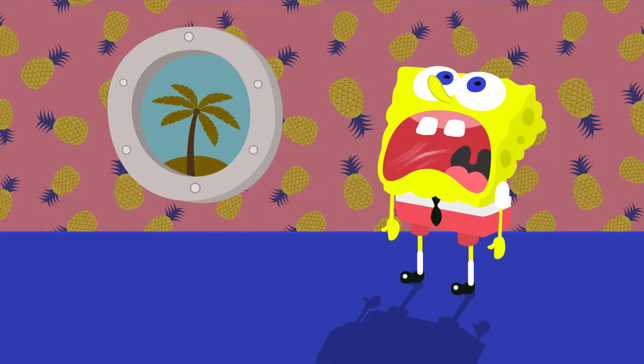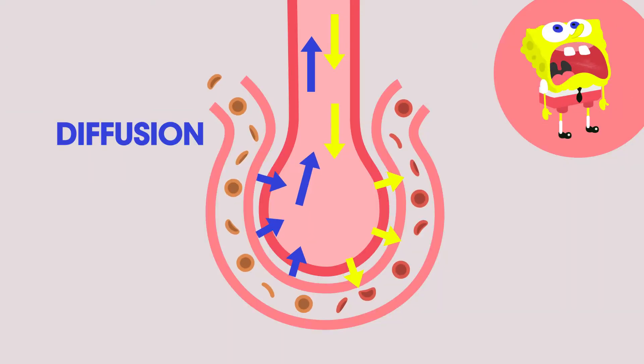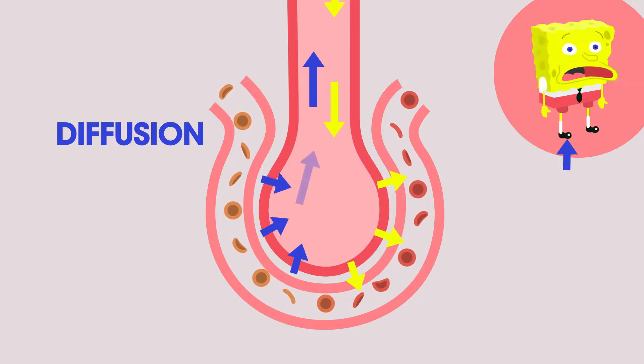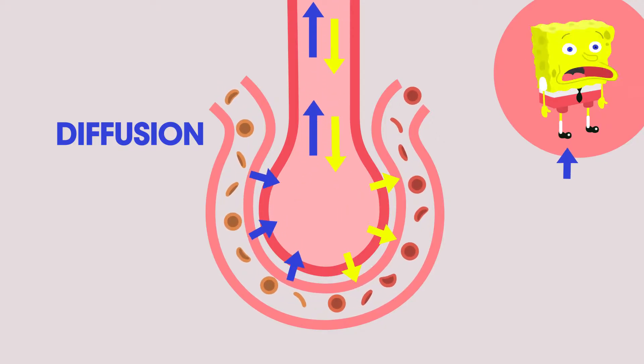Imagine if we took a couple of months for the oxygen we breathed to reach our cells. Well, if we relied on diffusion alone, for oxygen to get to the tips of our toes, it would take about this long.